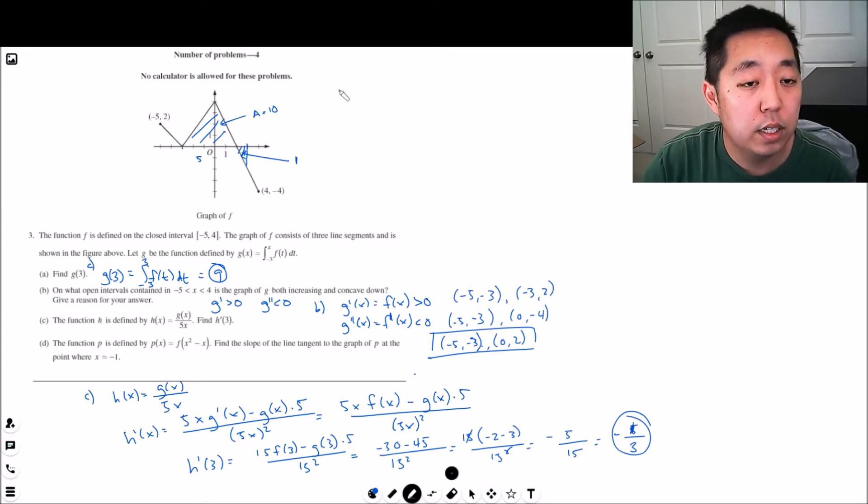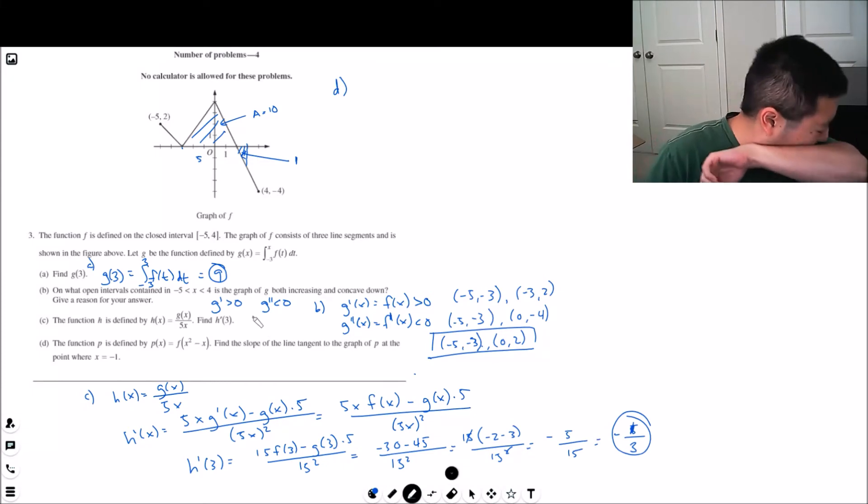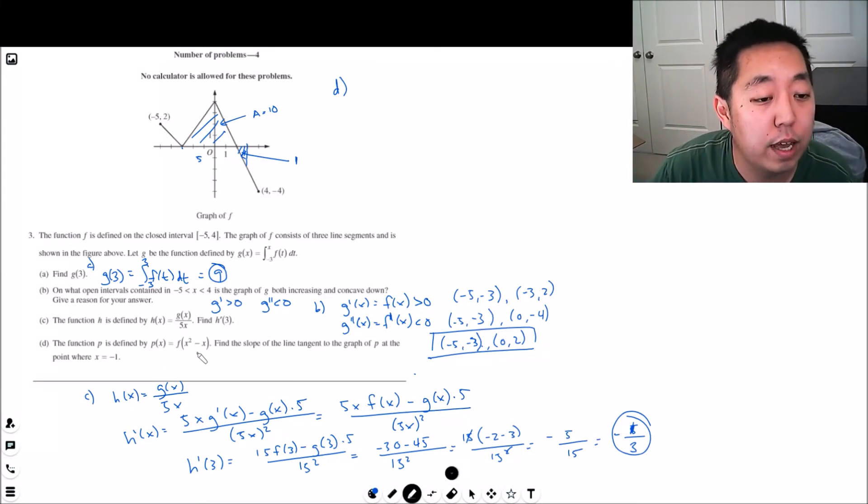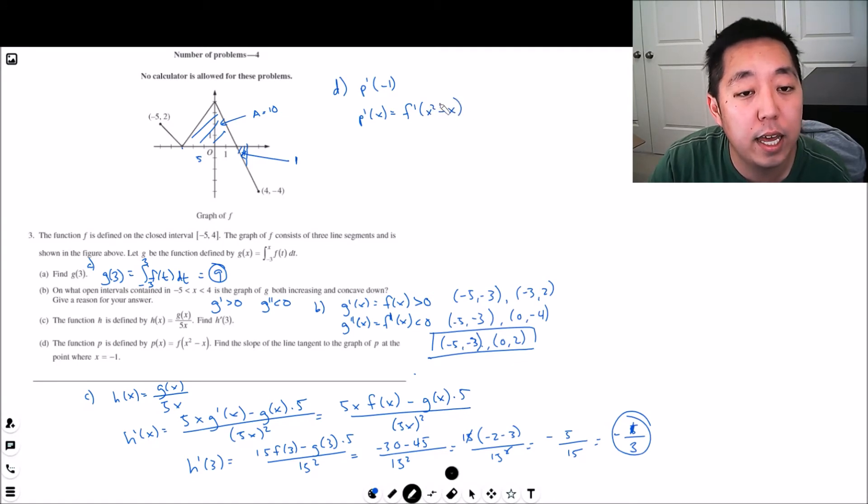D, the function p is defined by p of x equals f of x squared minus x. Find the slope of the line tangent to the graph of p at the point where x equals negative one. Slope of the tangent line means I need p prime at negative one. p prime of x, the derivative is the derivative of f, but because the inside is not x I gotta do by chain rule, two x minus one.